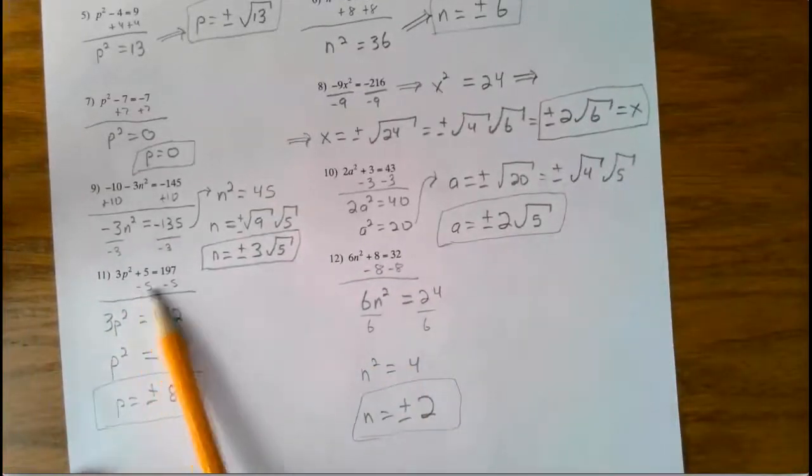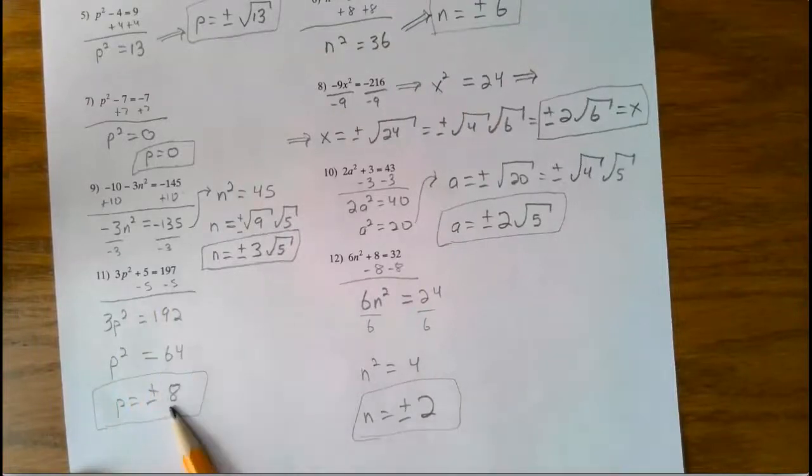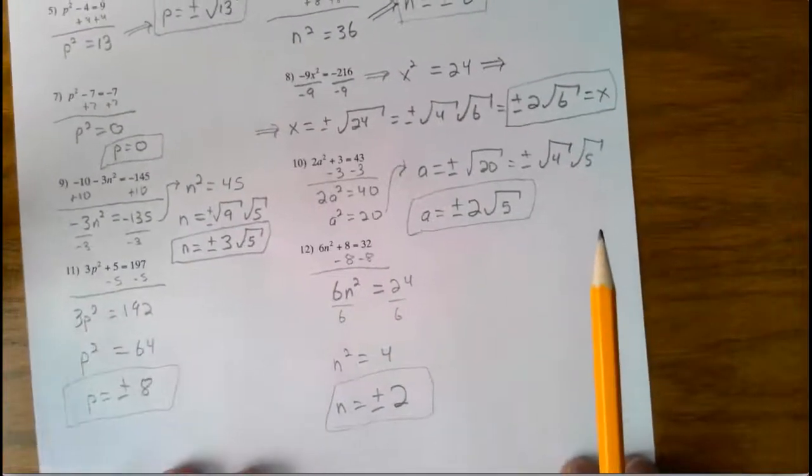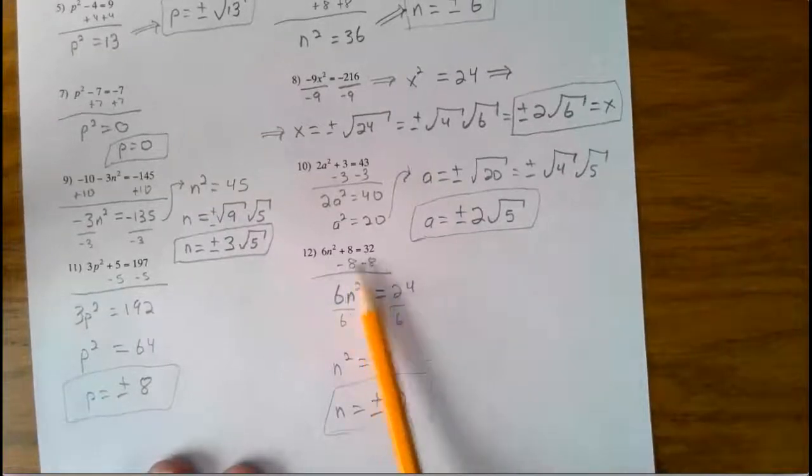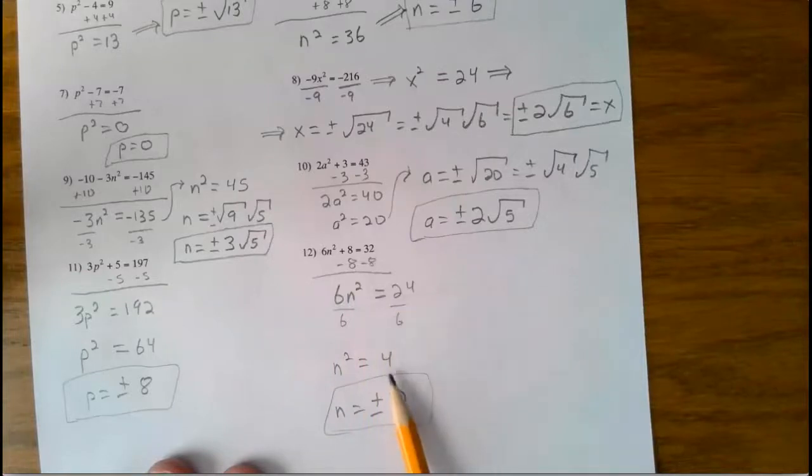This one's pretty straightforward. Subtract 5. Divide by 3. I got plus or minus 8. This one again, subtract 8 from both sides, and then divide both sides by 6. I got 4. Square root of that, plus or minus 2.